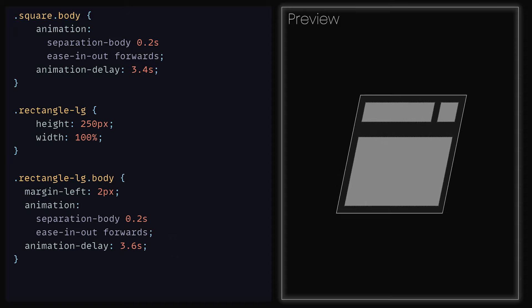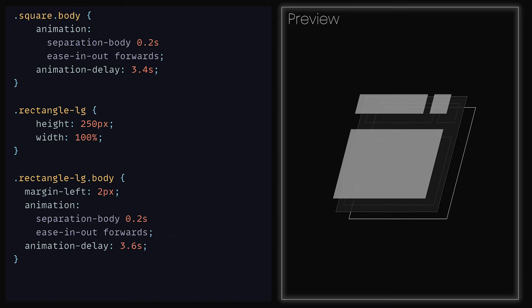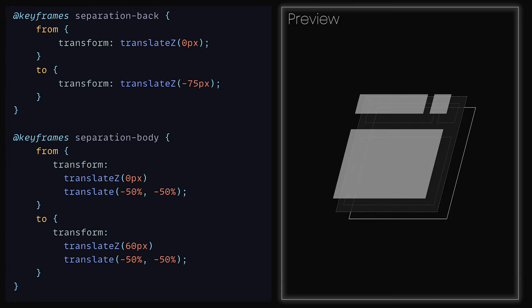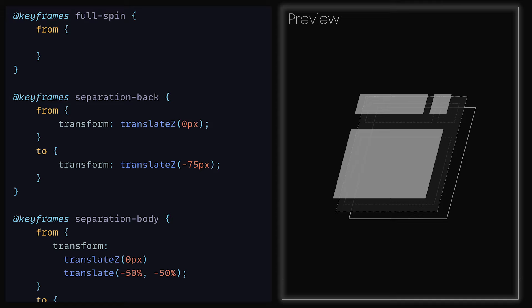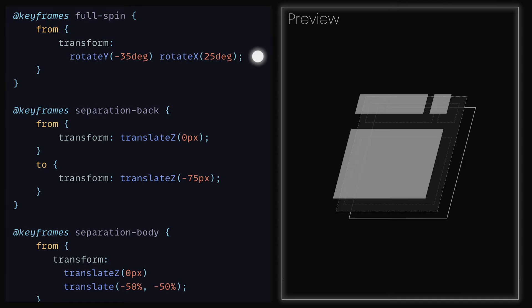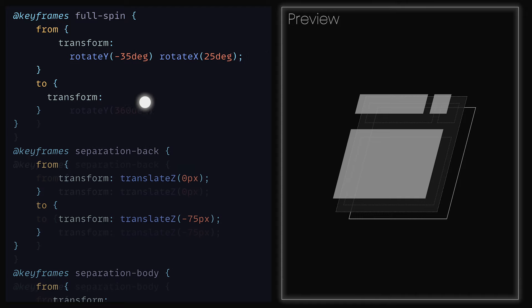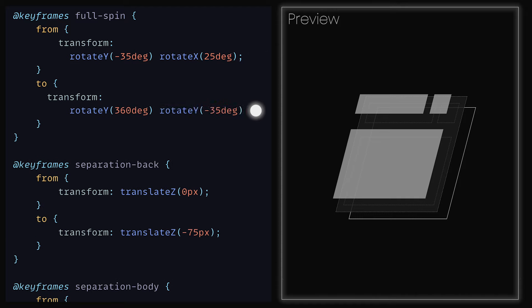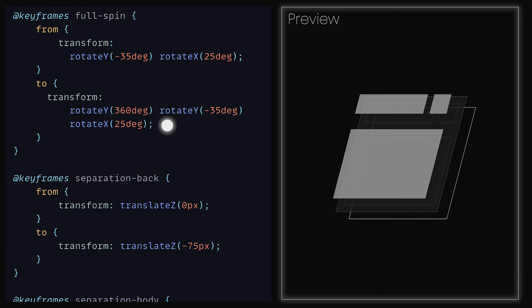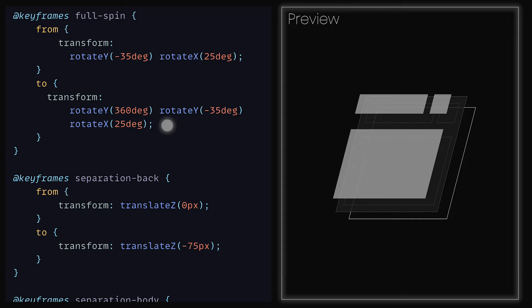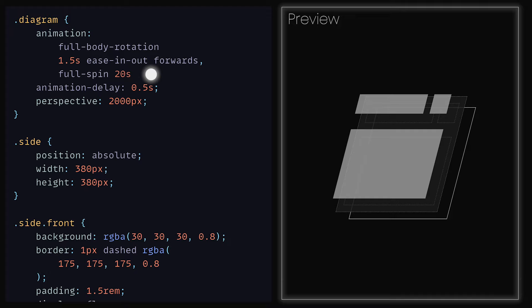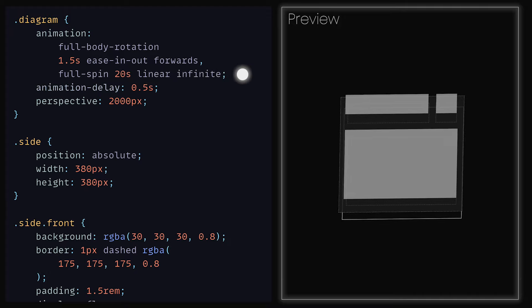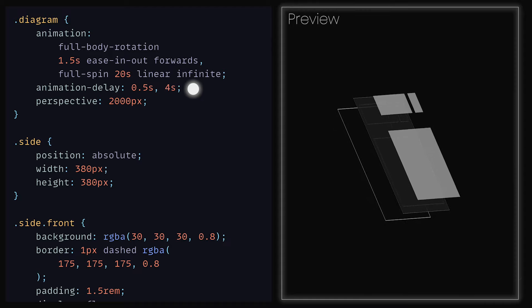Looking at our 3D CSS animation, we now have the rotation and then the back separates from the front. Once that's done, the rectangles separate, leaving only an outline of where they once existed. The final animation for this is to set the rotate infinitely. Back at the top where we have our keyframes, we can create a new one called FullSpin, where we can have transform to start with rotateY minus 35 degrees and rotateX to be 25 degrees — the same values as the final frame of our first rotation animation. For the to section, we can set transform to be rotateY 360 degrees and another rotateY to be negative 35 degrees and rotateX to be 25 degrees, so that it transitions smoothly without snapping back every time one loop finishes. Then back in the diagram class, we can include FullSpin, set that to 20 seconds, making the easing linear and the repeat to be infinite. The easing linear means that the speed of the animation will be distributed equally throughout the animation sequence. We now have our first 3D animation built completely from CSS.